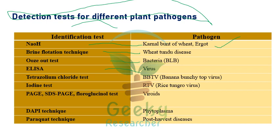ELISA (Enzyme Linked Immunosorbent Assay) is especially recommended for identification of plant viruses. Tetrazolium chloride test is recommended for banana bunchy top virus. Iodine test is used for rice tungro virus. ELISA cannot be recommended for viroids; instead, special techniques like PAGE (polyacrylamide gel electrophoresis), SDS-PAGE, and fluoroglucinol test are recommended for viroid detection.